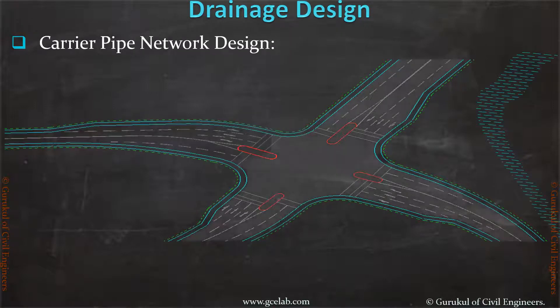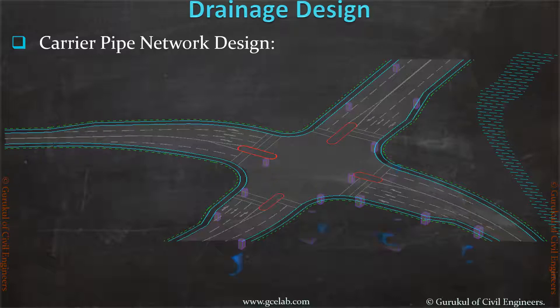Now let's see how to develop a pipe and gully connection 3D model. First, place all the gullies as per the gully calculation output. Then place the carrier pipe network and manholes. Then connect them to the gully pots.